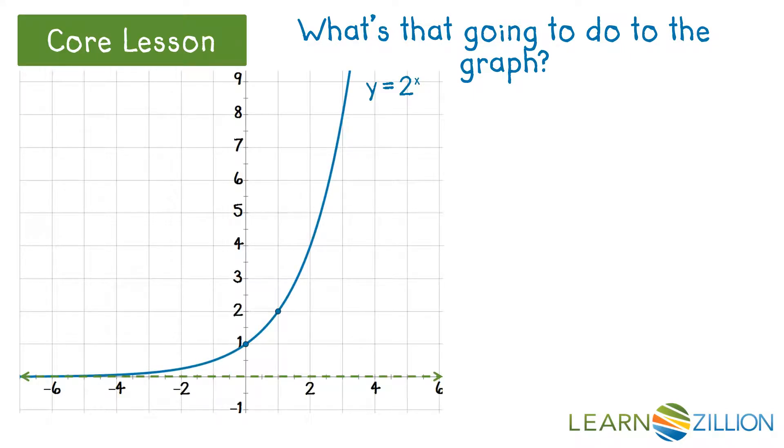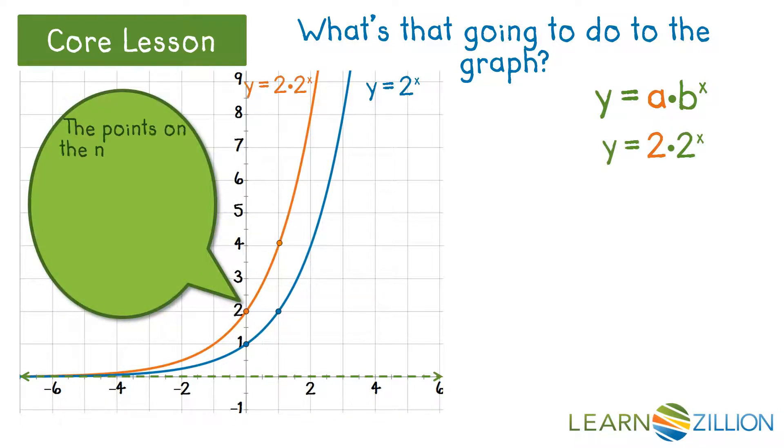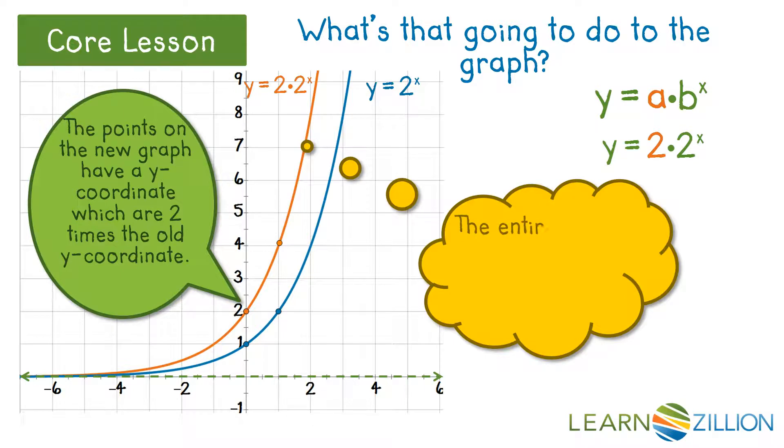If we take a basic exponential function and multiply it by some real number a, or 2 in this example, the points on the new graph have a y-coordinate which are 2 times the old y-coordinate. If we multiply all y-values by 2, the graph will be stretched 2 times higher.